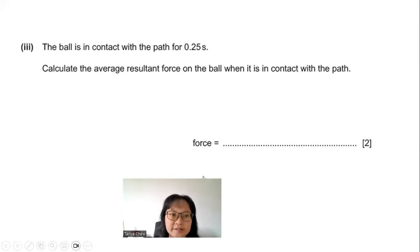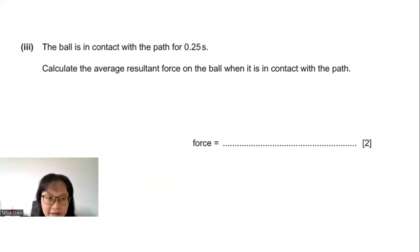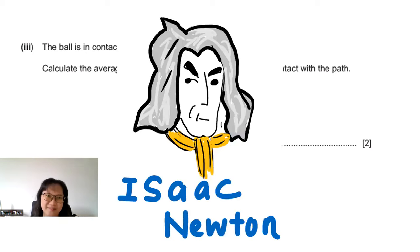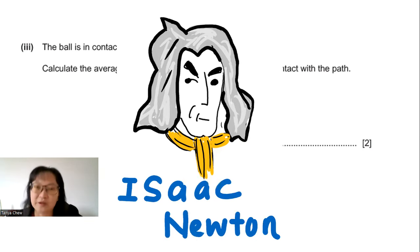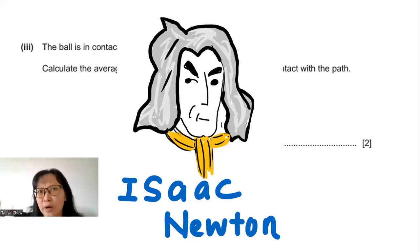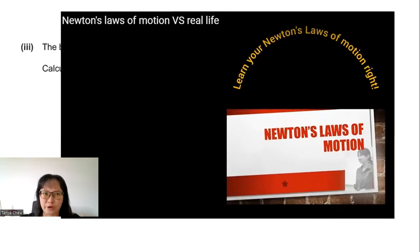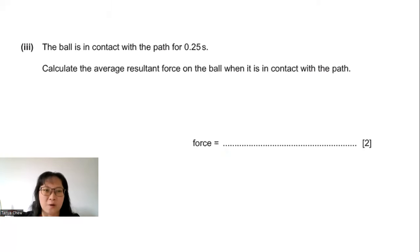Part D: The ball is in contact with the path for 0.25 seconds. Calculate the average resultant force on the ball. To find average resultant force, I use Newton's second law, which states that force equals the rate of change of momentum — that is, change in momentum divided by time taken.